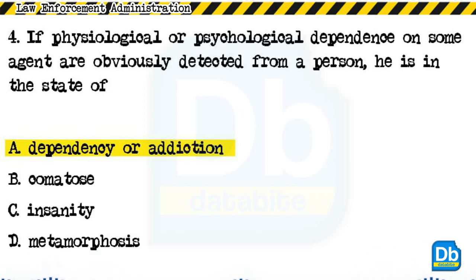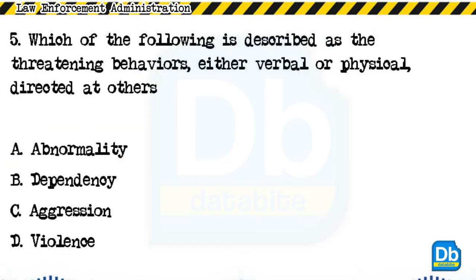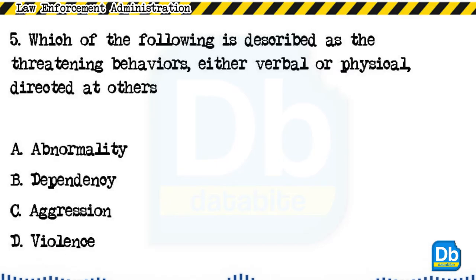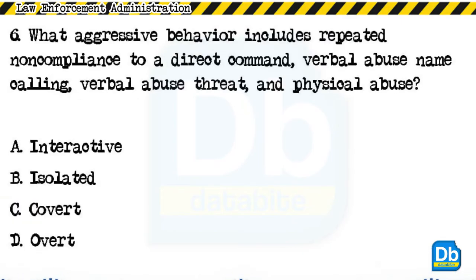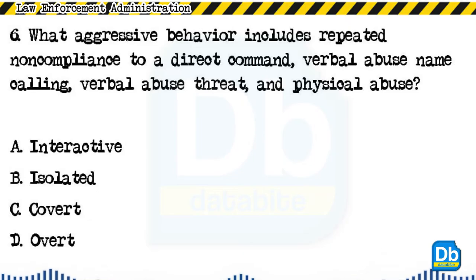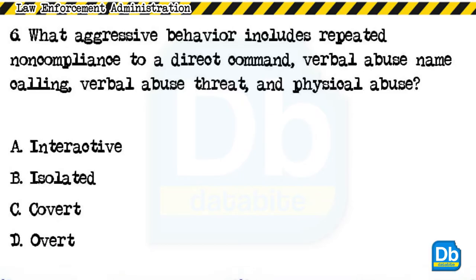The answer is A, dependency or addiction. Question 5: Which of the following is described as threatening behaviors, either verbal or physical, directed at others? a) abnormality, b) dependency, c) aggression, d) violence. The answer is C, aggression. Question 6: What aggressive behavior includes repeated non-compliance to a direct command, verbal abuse, name calling, verbal threat, and physical abuse? a) interactive, b) isolated, c) covert, d) overt.